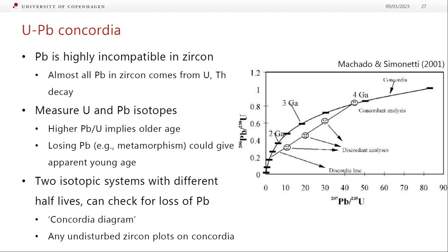What's great about zircon is that lead is highly incompatible in zircon. Because we have plenty of uranium and thorium and we have no lead to begin with, almost all of the lead in zircon is coming from uranium and thorium decay. So if we can measure the amount of uranium and the ratios of lead isotopes, we can figure out how long it is since that zircon formed, because it keeps accumulating lead over time. A higher lead-over-uranium ratio implies that it's very old, because we're growing lead over time while uranium isn't changing by a huge amount.